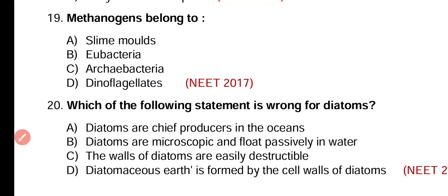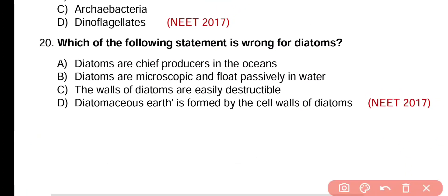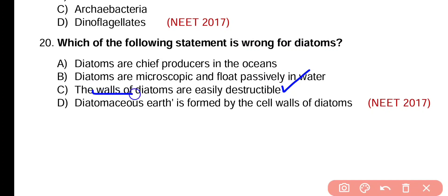Question number 20. Which of the following statements is wrong for diatoms? Diatoms are chief producers in ocean. Diatoms are microscopic and float passively in water. The walls of diatoms are easily destructible. Diatomaceous earth is formed by the cell walls of diatoms. The wrong statement is option C — diatom walls are deposited with silica and impregnated with calcium carbonate, making them very strong and not easily destroyed.